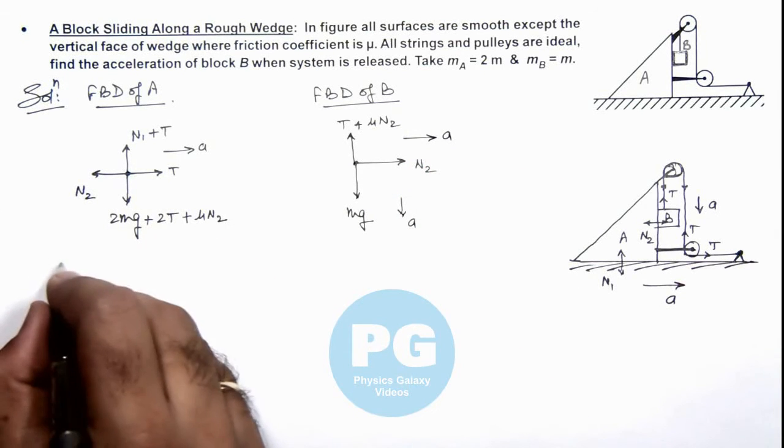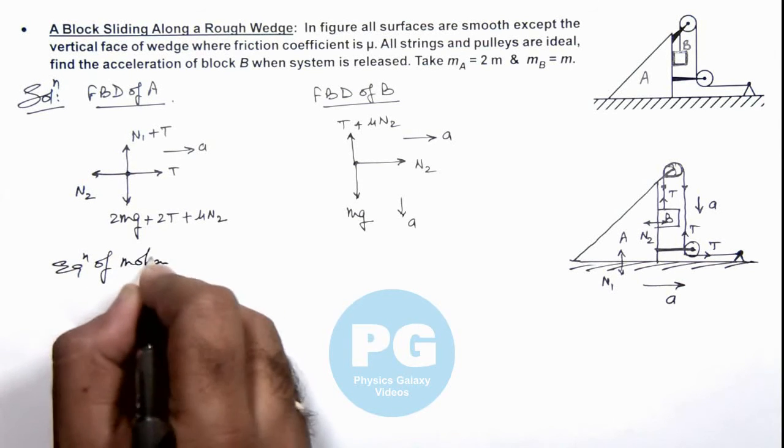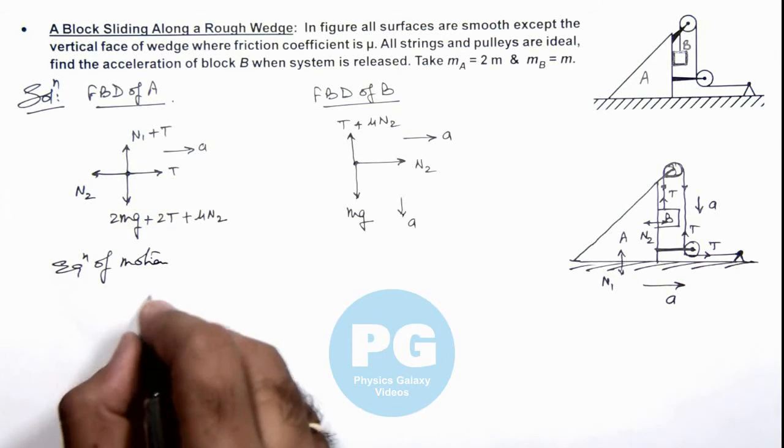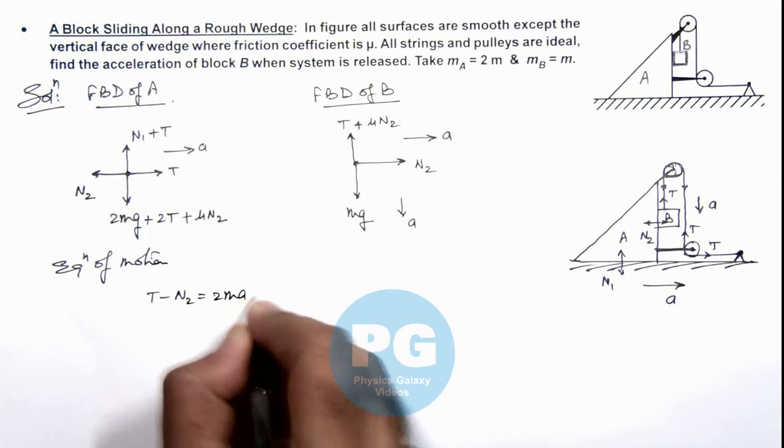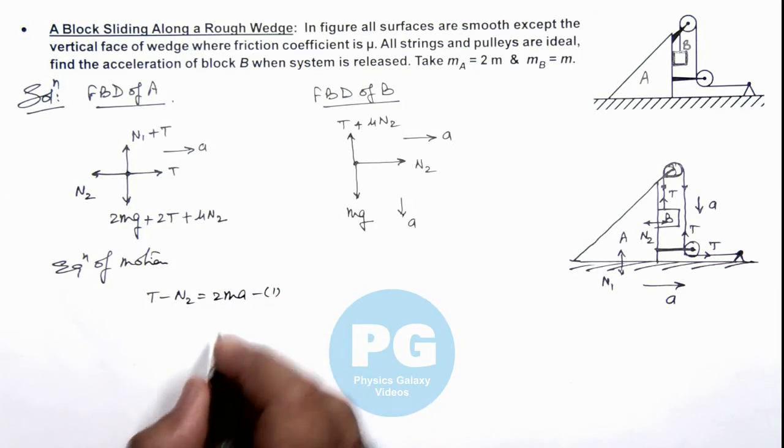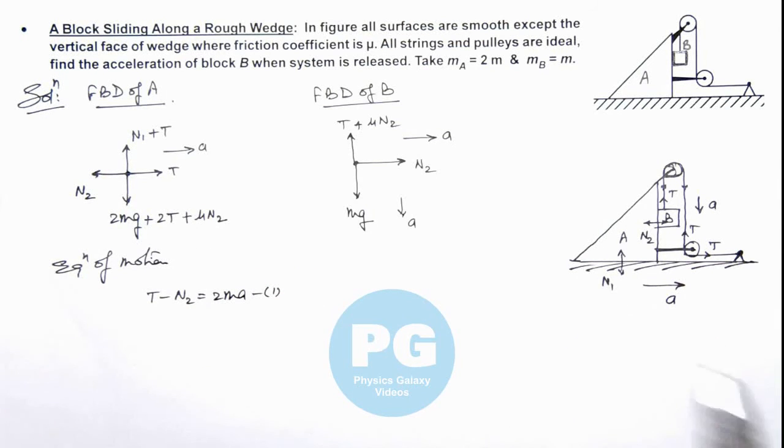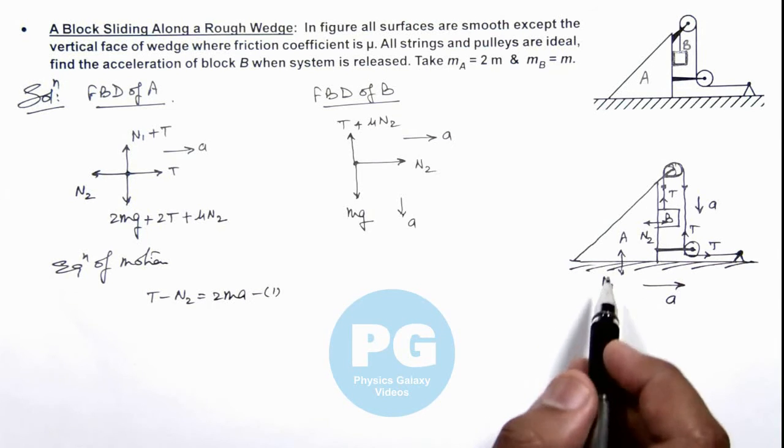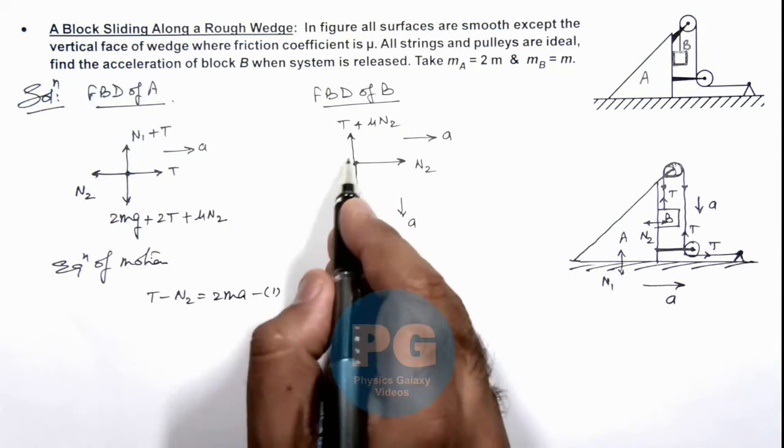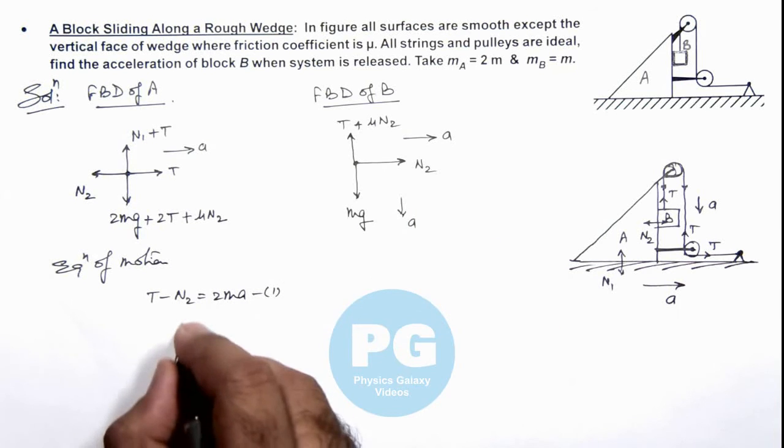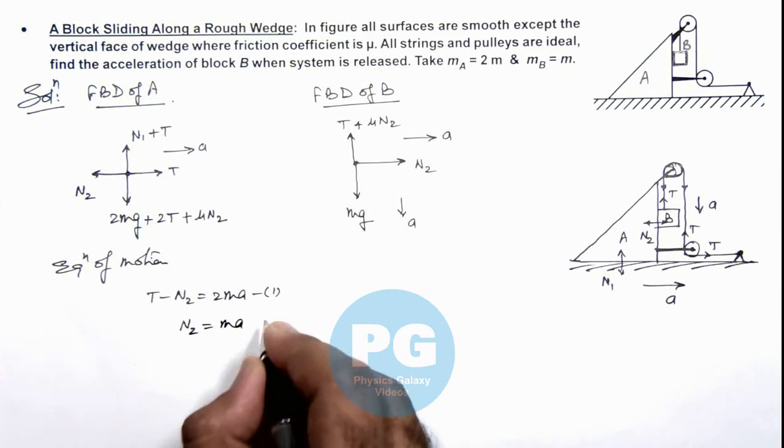Now in this situation, if we write the equation of motion for these blocks, for block A we can write T - N₂ = 2ma, that is equation 1. For vertical direction we don't need to write the equation for A because there is no friction on ground; ground is smooth here. So for B we can write, toward right it is moving, so N₂ = ma, that is our equation 2.